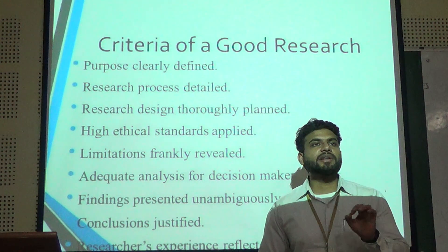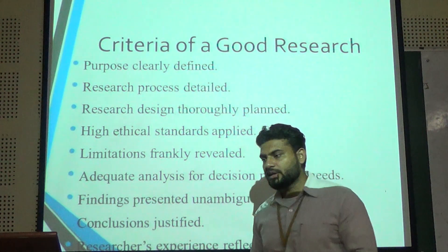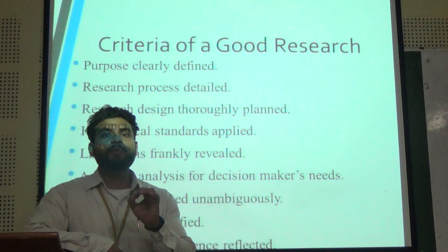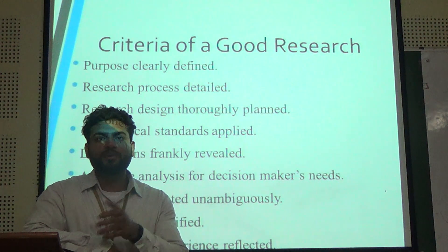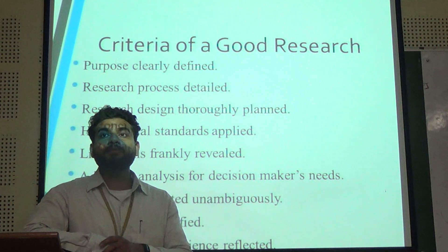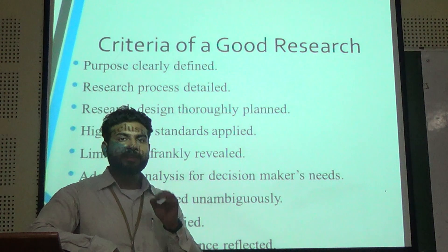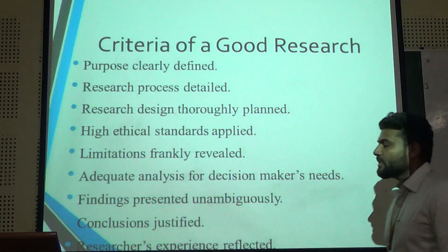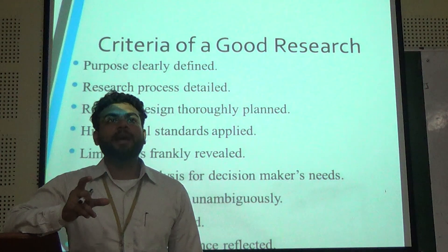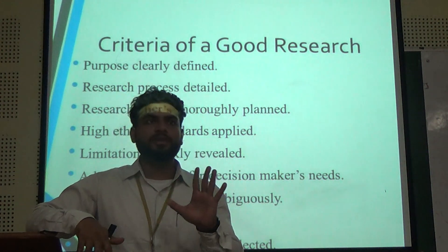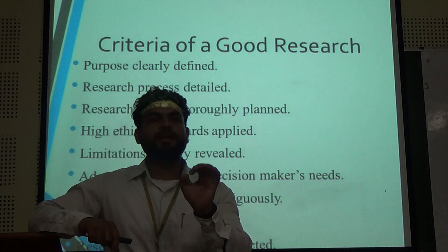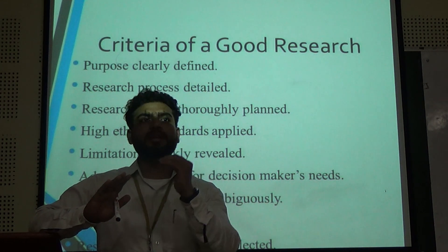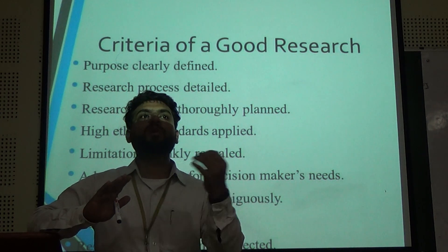There must be limitations in every field. I am talking about three major factors: time, money, and resources. Every researcher has limited time, limited money, and limited resources. They have to conduct the research within a fixed time period — they cannot take five or six years for a one-year research. Adequate analysis for decision-maker needs means having an adequate amount of data from respondents. If we have 405 respondents, we base our result on that. We cannot minimize or add data arbitrarily — that would be unethical practice.